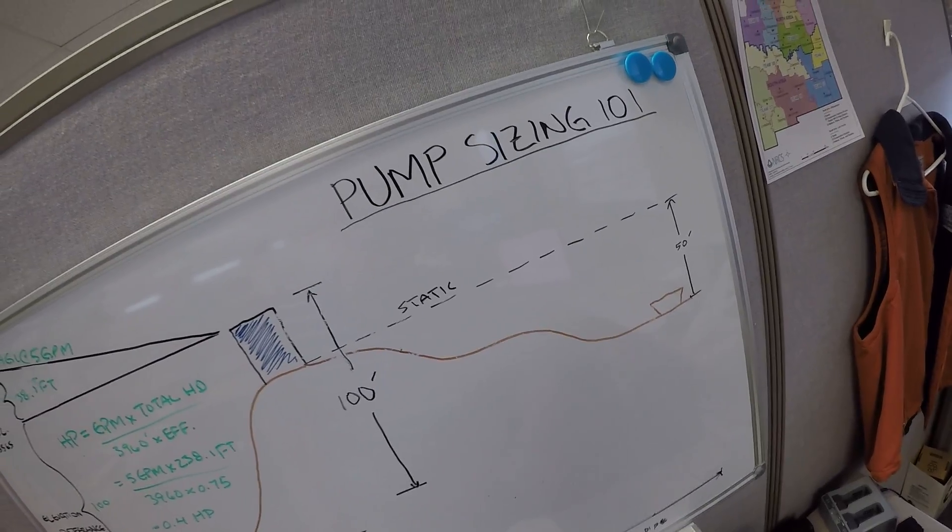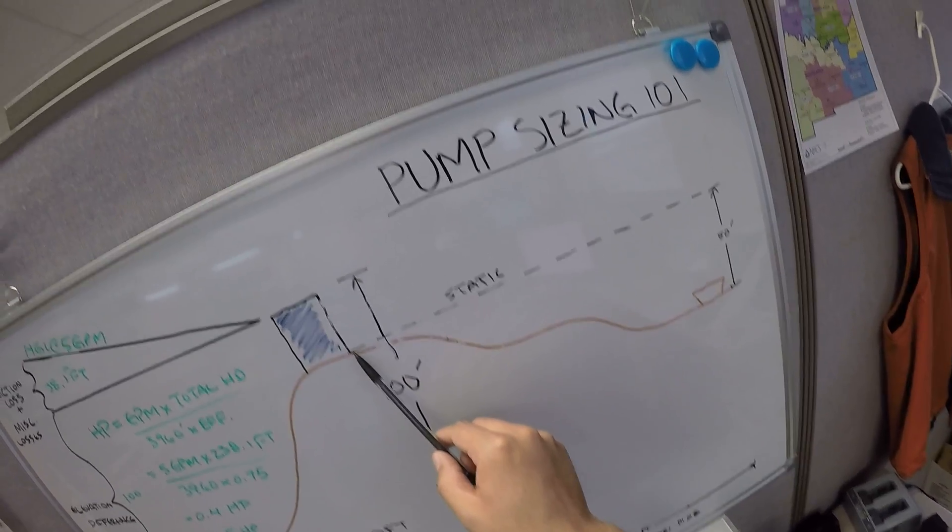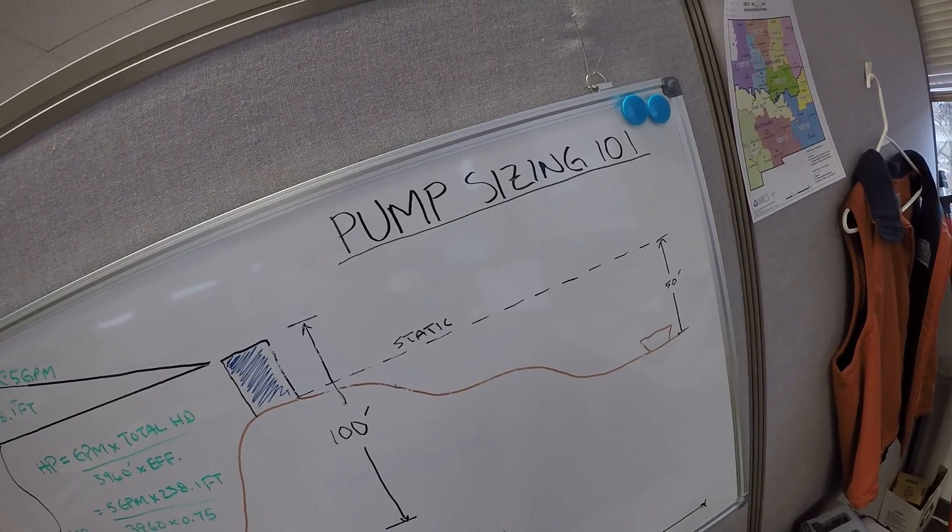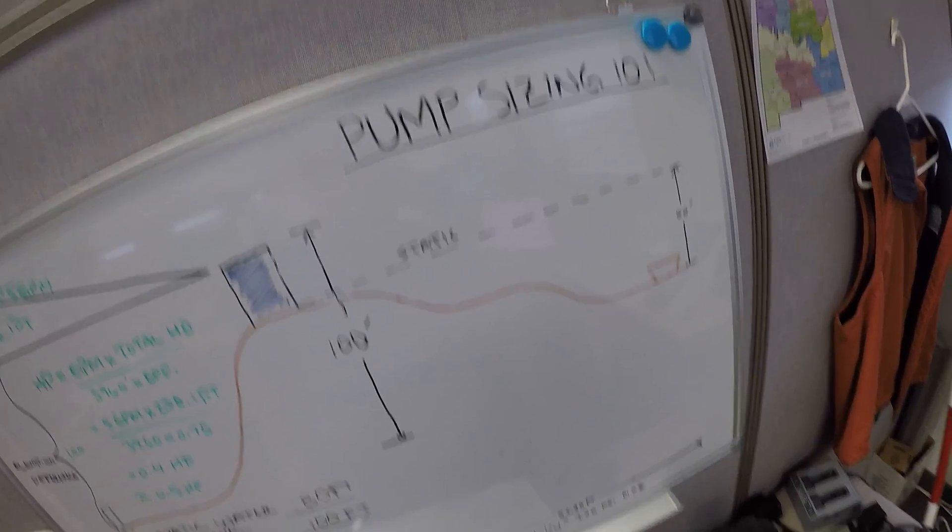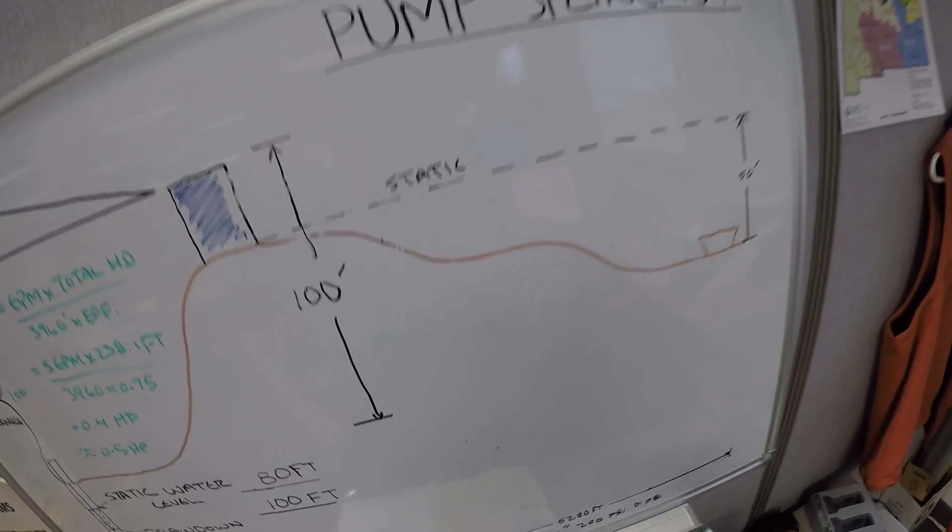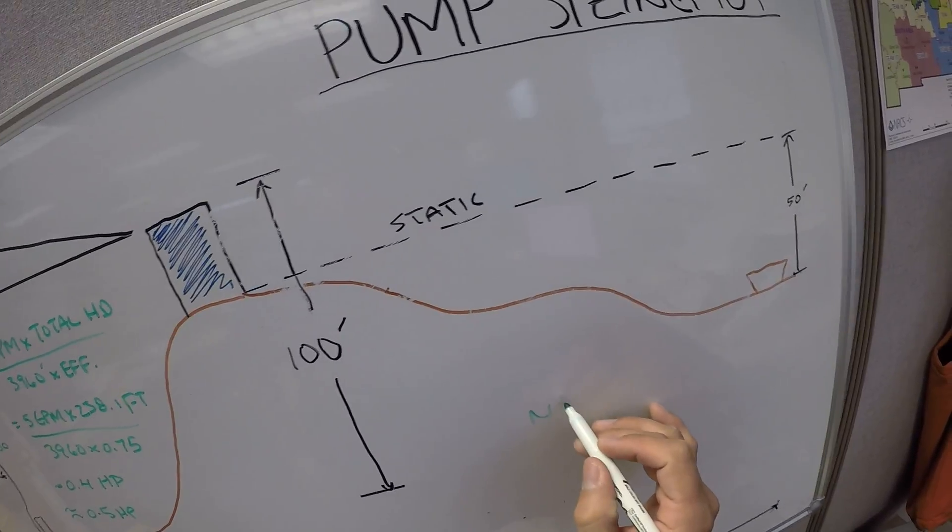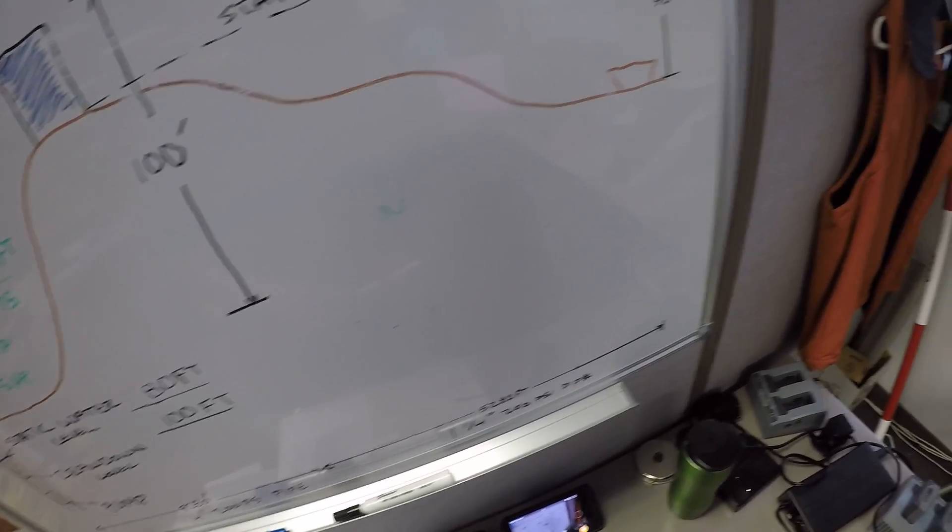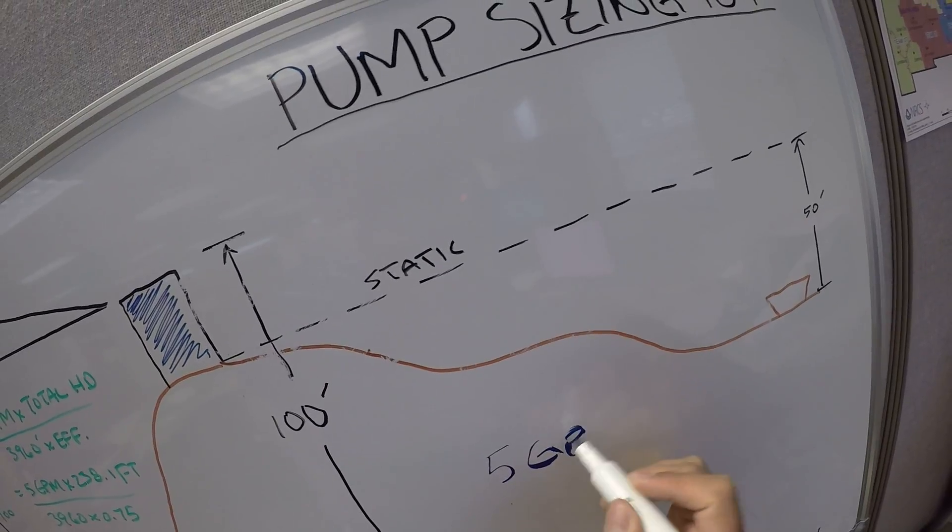So now we need to know if water will get from this point to the trough, and the need for water is going to be 5 GPM again, because that was what the water inventory said.